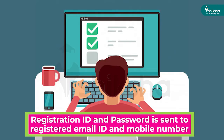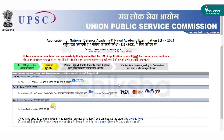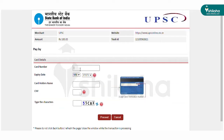The registration ID is also sent to the candidate's registered email ID. Candidates need to log in with their registration ID and date of birth to fill Part 2 of the NDA application form. In Part 2, candidates need to pay the application fees, select the exam center, and upload scanned images of photograph, signature, and photo identity proof.